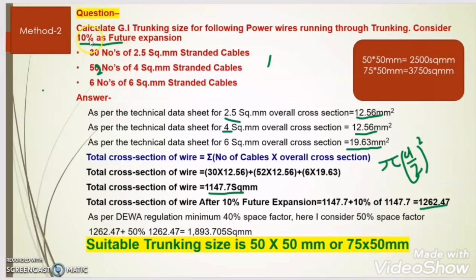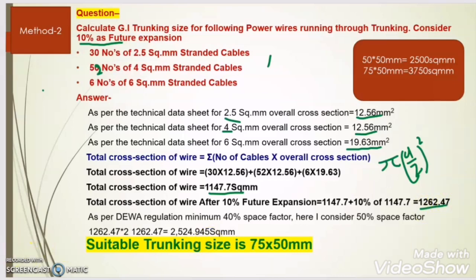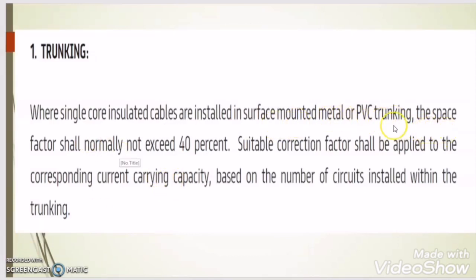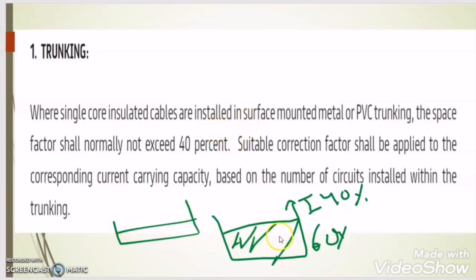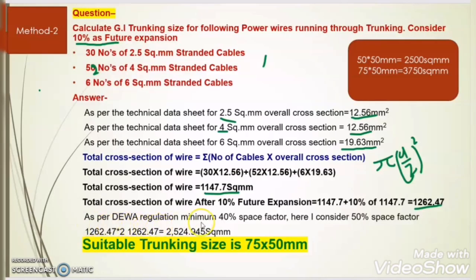As per the question, we have to consider 10% as future expansion. After adding 10%, the total cross section area of wire becomes 1262.67 sq mm. As per the DIVA regulation for metal and PVC trunking, the space factor shall not exceed 40%. This means the trunking should have at least 40% free space. We can go for 50% wire and 50% space, but minimum 40% space is required. Here I consider a 50% space factor, which satisfies the DIVA regulation.